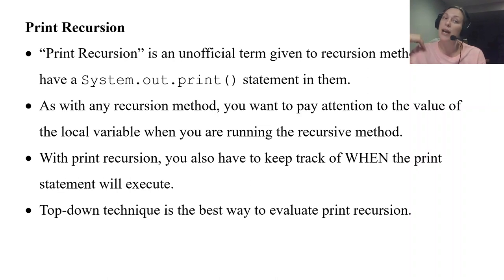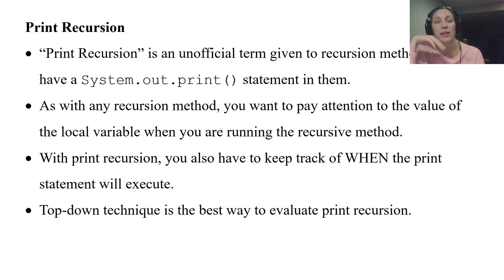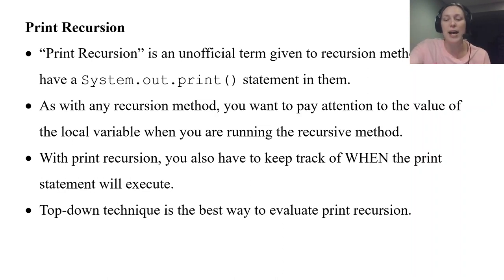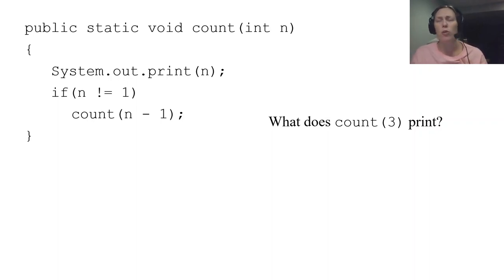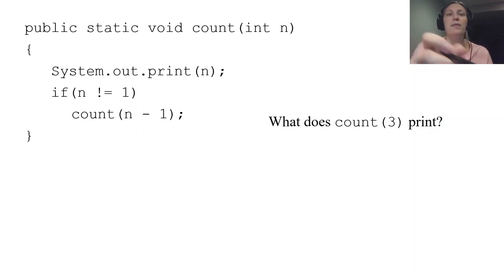I'm still going to be using the top-down technique to evaluate these recursive methods. All of these examples use the top-down technique. We've been dealing with recursion where the parameter and return value are primitives like integers, booleans, or doubles. This might be the first one where we've seen a void method — a void return.